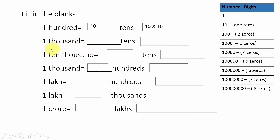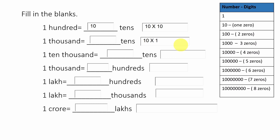Next question: one thousand equals how many tens? This thousand should be written as a product of tens — ten into what number? What number should be multiplied by ten to get a thousand? The answer is hundred. So the answer is hundred tens.